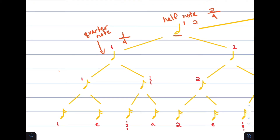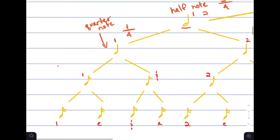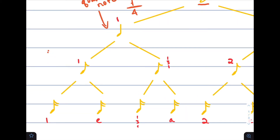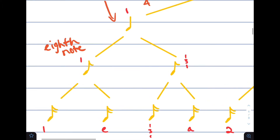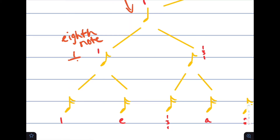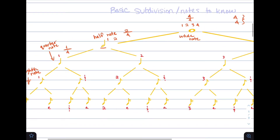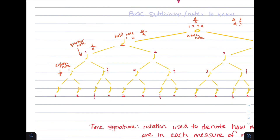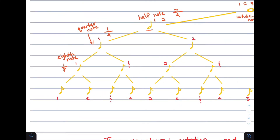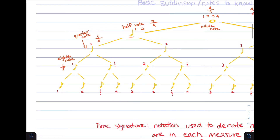A quarter note can be further subdivided into two eighth notes. An eighth note can be denoted by a little flag on the top of the stem of the note. An eighth note is worth one eighth of the entire whole note — it's a half of a quarter note, a fourth of a half note, and an eighth of a whole note.